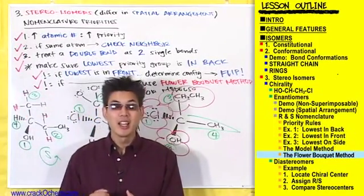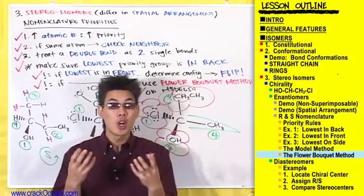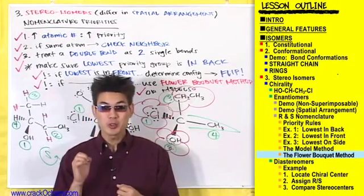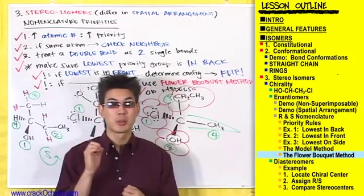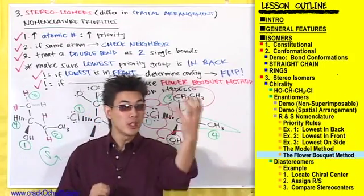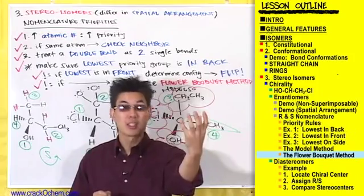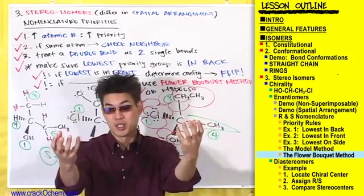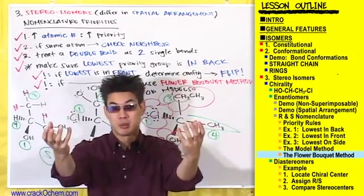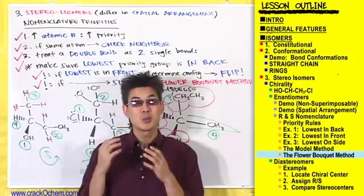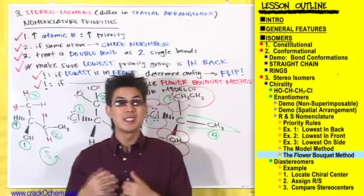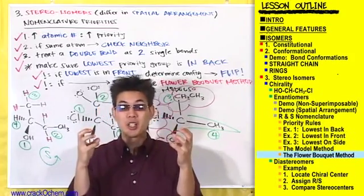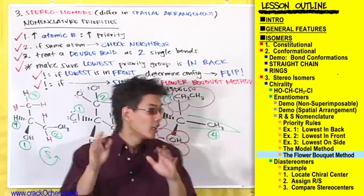The last thing I want to cover here is how to draw an enantiomer. This is useful in cases where your professor gives you one of the enantiomers, like the S enantiomer, and asks you to draw the other enantiomer, the R enantiomer. This is really simple — all you have to do is draw the mirror image of a compound.